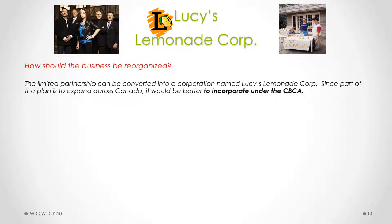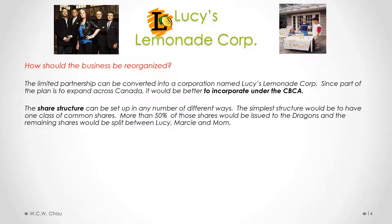The first step is to convert the limited partnership into a corporation named Lucy's Lemonade Corp. Given that part of the plan is to expand across Canada, it would make better sense to incorporate under the CBCA instead of the OBCA — using the OBCA would require obtaining extra-provincial licenses in each province outside of Ontario. Having decided to incorporate a CBCA corporation, we need to decide on the appropriate share structure. The simplest structure would be one class of common shares, with more than 50% issued to the dragons and the remaining shares split between Lucy, Marcy, and Mom.